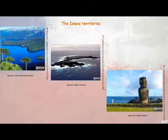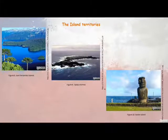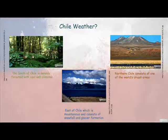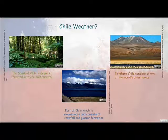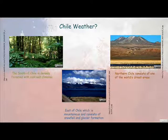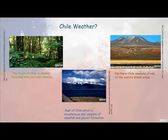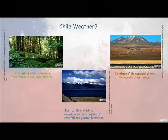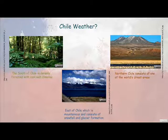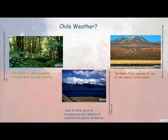The climate in Chile is characterized by the Mediterranean type, which features dry, hot summers and cold, wet winters. The climate conditions in Chile vary across different regions. In east Chile, it is mountainous, with snowfall and glacier formation. The south of Chile is densely forested with cool, wet climates. Northern Chile consists of one of the world's driest areas, with temperate winters and dry summers. In the southern area of Chile, the area is wet all year round.